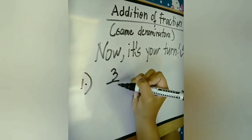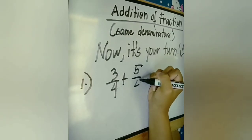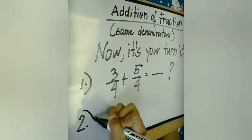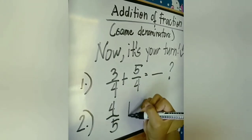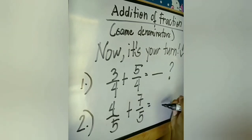Number 1 is 3 fourths plus 5 over 4. So, what is the answer for 3 over 4 plus 5 over 4? And number 2, what is the answer when we add 4 fifth or 4 over 5 plus 7 over 5? Let me know your answer in the comment section.